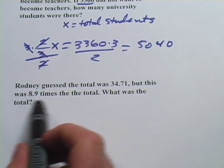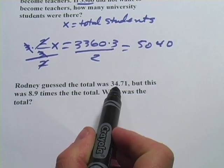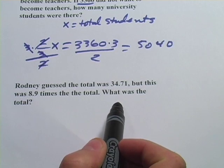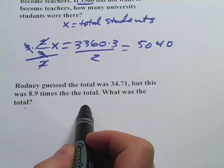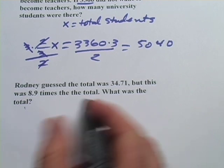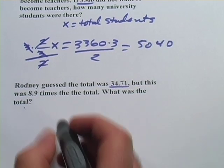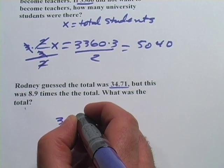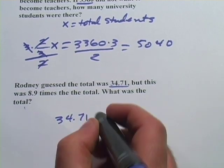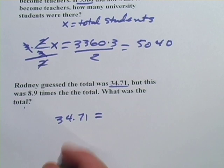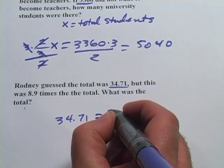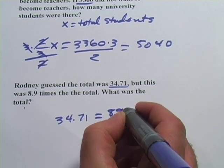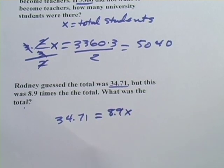Last one. Rodney guessed the total was 34.71. But this was 8.9 times the total. What was the total? So this is the 34.71, and that is 8.9 times the total. So 34.71 is 8.9 times the total, which I'm going to call x. So there we go, all we have to do to solve for x,